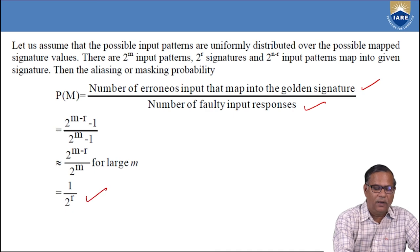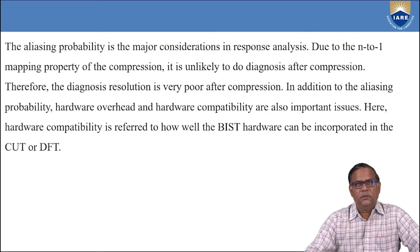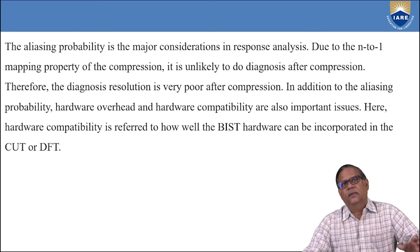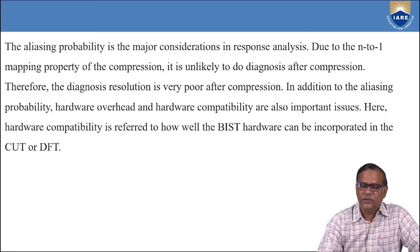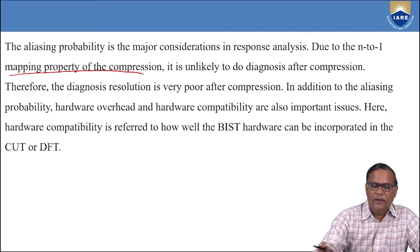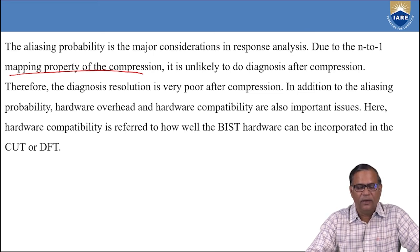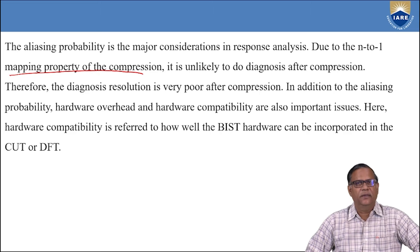The aliasing probability equals 1 / 2^r, and is a very important parameter in response analysis because the faulty circuit may escape BIST detection. Due to the n-to-1 mapping property of compression, it is unlikely to perform diagnosis after compression — so diagnosis resolution is very poor after compression. In addition to aliasing probability, hardware overhead and hardware compatibility are also important issues. Hardware compatibility refers to how well the BIST hardware can be incorporated into the CUT or the DFT — design for testability.